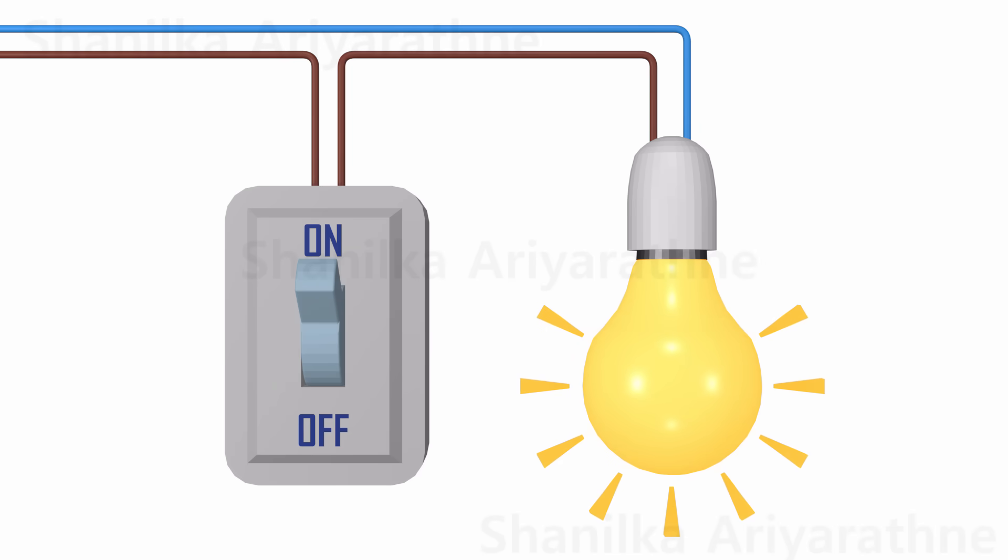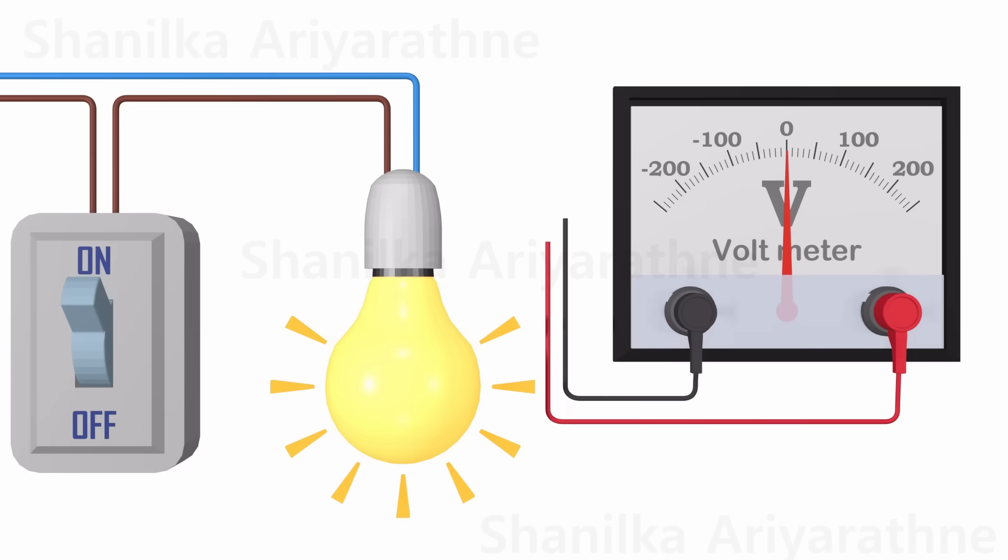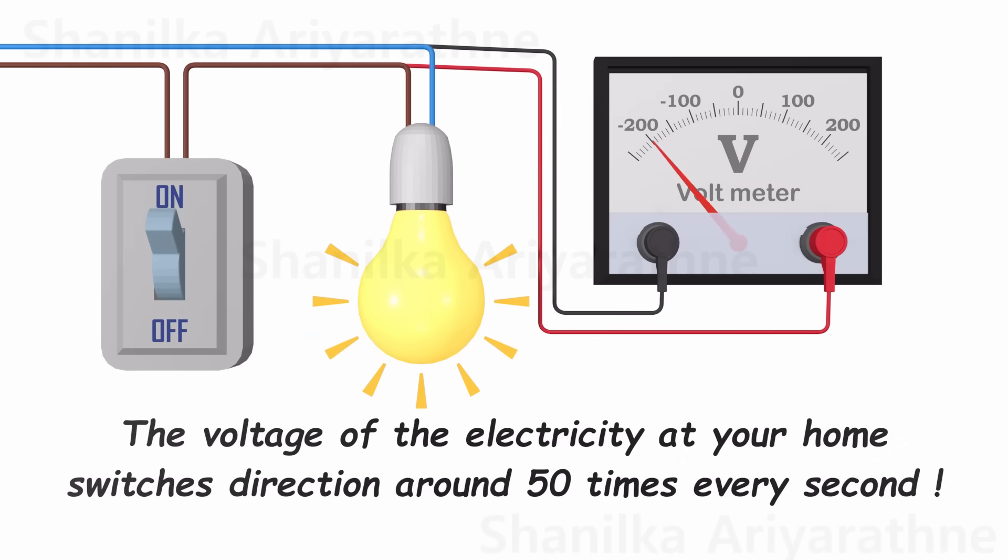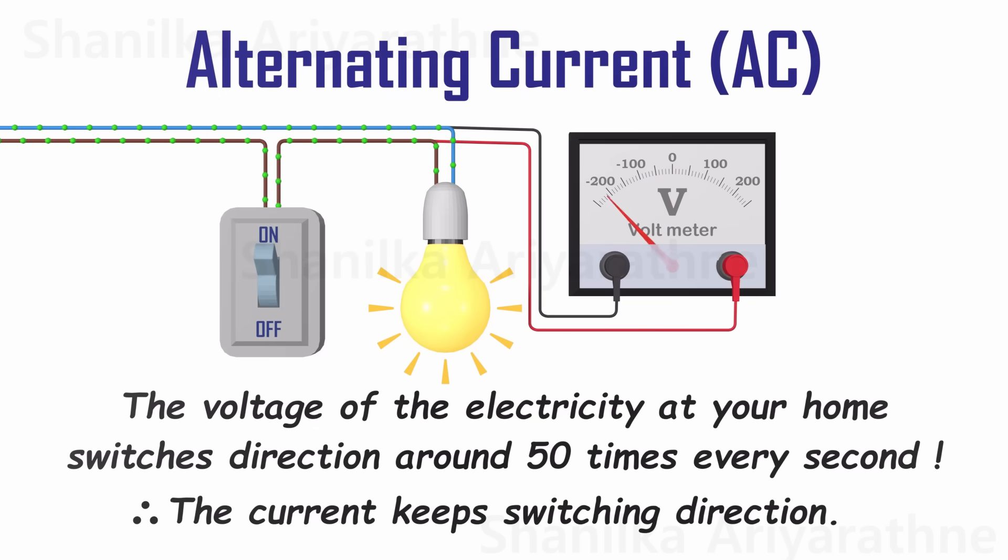Did you know that the voltage of the electricity in your home undergoes rapid changes? This is because the electric current alternates its direction continuously, creating what we call alternating current.